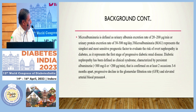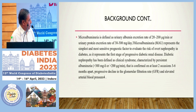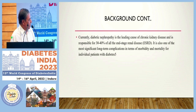Microalbuminuria is defined as 30 to 300 mg per day of urinary protein excretion, or 20 to 200 micrograms per minute. Currently, diabetic nephropathy is a leading cause of chronic kidney disease in 30 to 40% of patients, including those with end-stage renal disease.